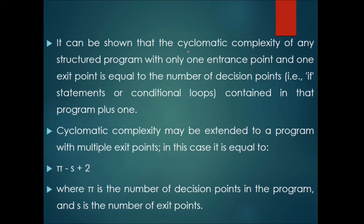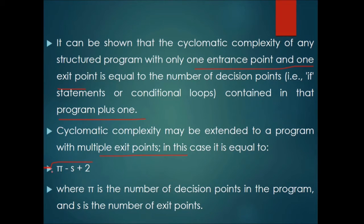For a structured program with a single entry and exit point, the cyclomatic complexity equals the number of decision points — such as if-statements or conditional loops — plus 1. For programs with multiple exit points, the formula extends to M = π − s + 2, where π is the number of decision points and s is the number of exit points.